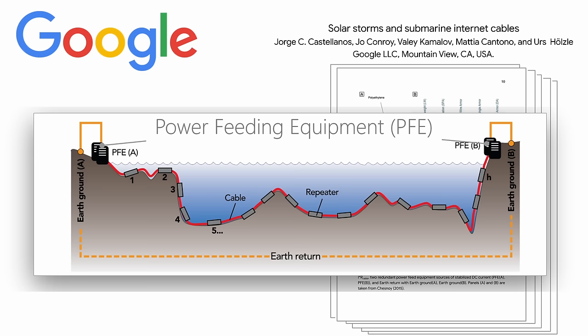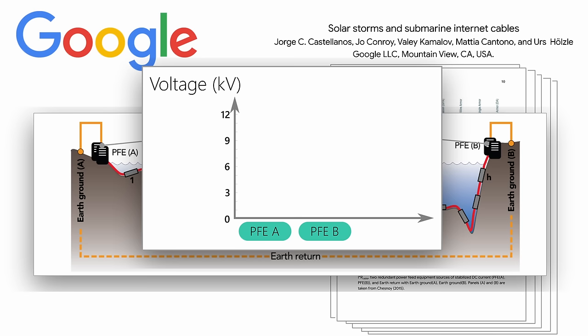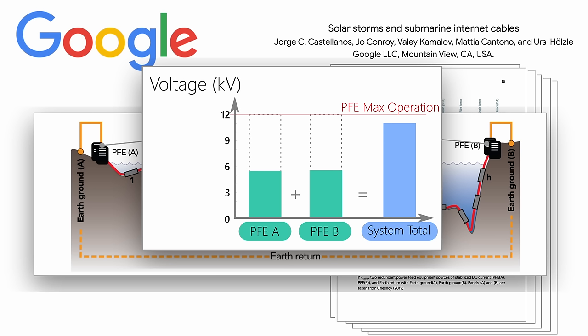They document that each fiber line is powered by two PFEs, or power feeding equipment. Each of these PFEs operate at just below half of their maximum operating voltage. For instance, the transatlantic fiber line operates with a total system voltage of around 11,000 volts. So under normal operating conditions, each PFE delivers around 5,500 volts to power the line, but each PFE is capable of delivering 12,000 volts. In this way, in case one PFE fails, the other can ramp up its voltage to 11,000 volts to compensate.